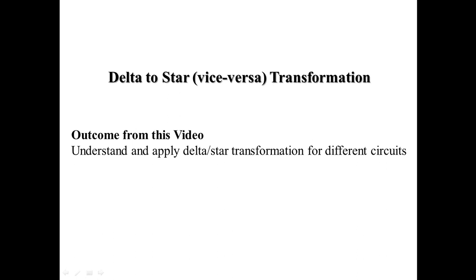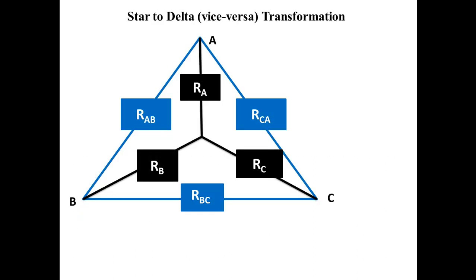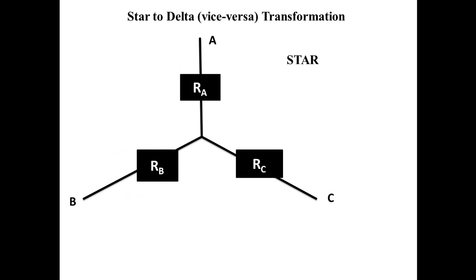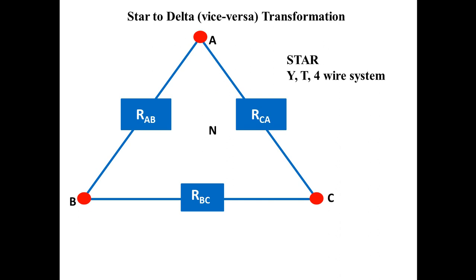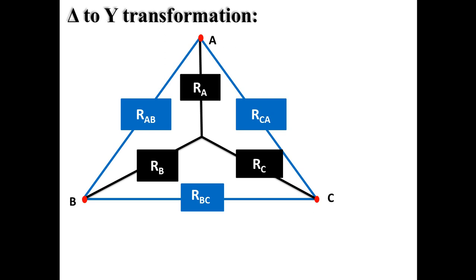Let us understand star-delta transformation and how we apply it for different circuits. Alternative names for star are Y, T, or four-wire system, with four ends A, B, C and midpoint N (neutral). Delta's alternative names are mesh, pi, or three-wire system, with three ends A, B, C — and the neutral point N does not appear in delta.